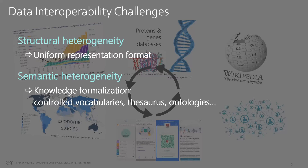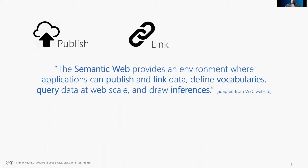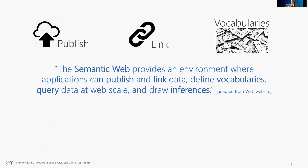When we talk about knowledge formalization we talk about controlled vocabularies, thesauruses, and ontologies — formal ways of expressing how you name things and what you refer to. In the domain of knowledge engineering and semantic web we have lots of techniques and technologies that can help achieve data interoperability. The semantic web, as defined by the W3C, provides an environment where applications can publish data on the web, link data between datasets, and define vocabularies that allow naming things unambiguously.